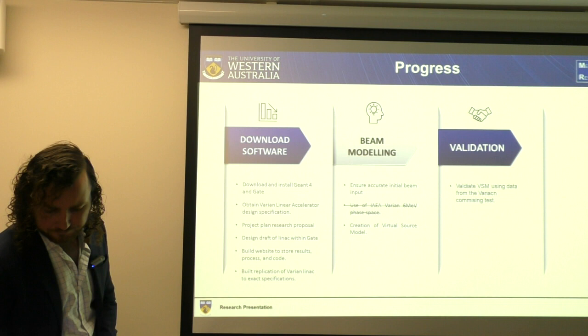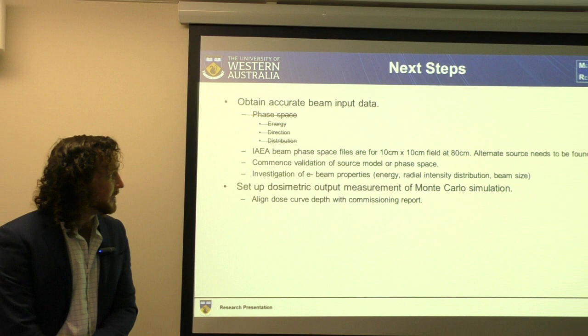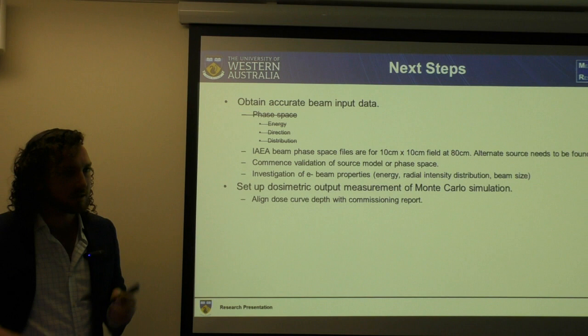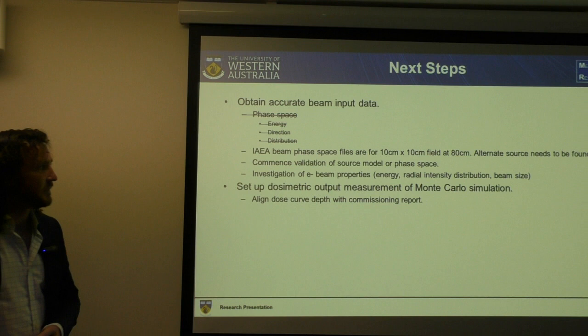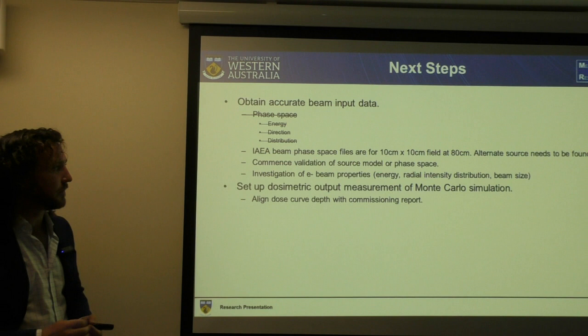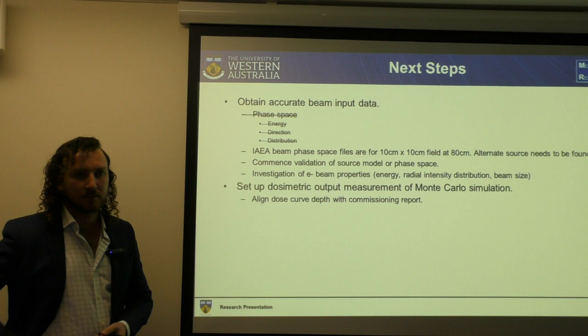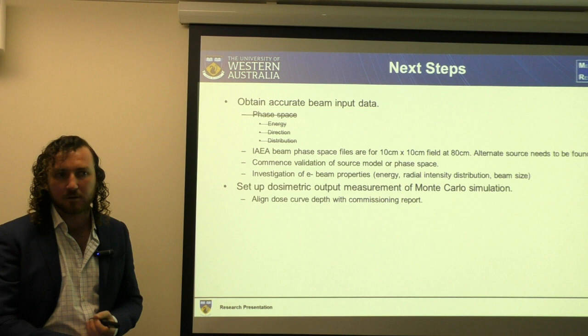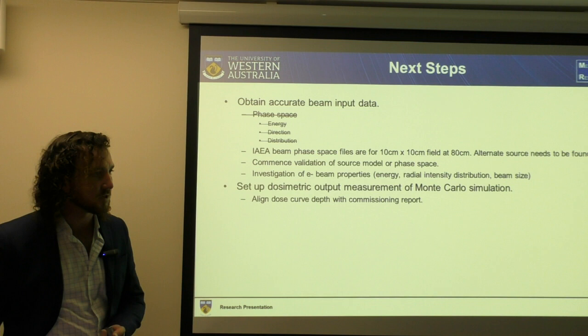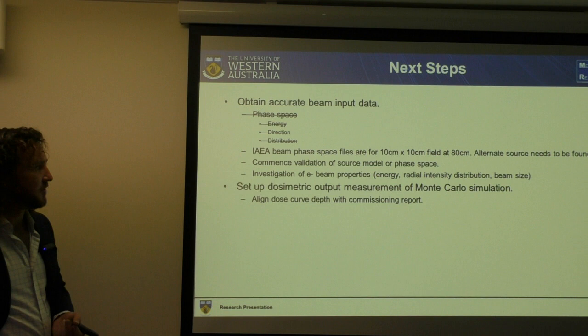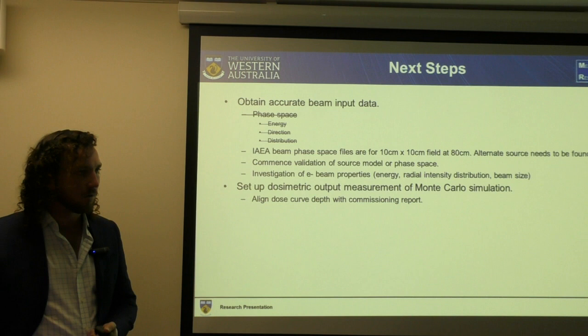Initially we tried using the IEA phase space files as the electron beam source, but that turned out not to be the right approach, so we've gone with the virtual source model. We're going to commence validation of the source model and phase spaces, investigating beam properties such as energy, radial intensity distribution, and beam size — mirroring the variables that differed across the literature — with the aim of achieving that 3% difference between our model and the actual commissioning report results. The next step after that is to set up the dosimetric output measurements on the Monte Carlo simulation to cross-reference against the validation.